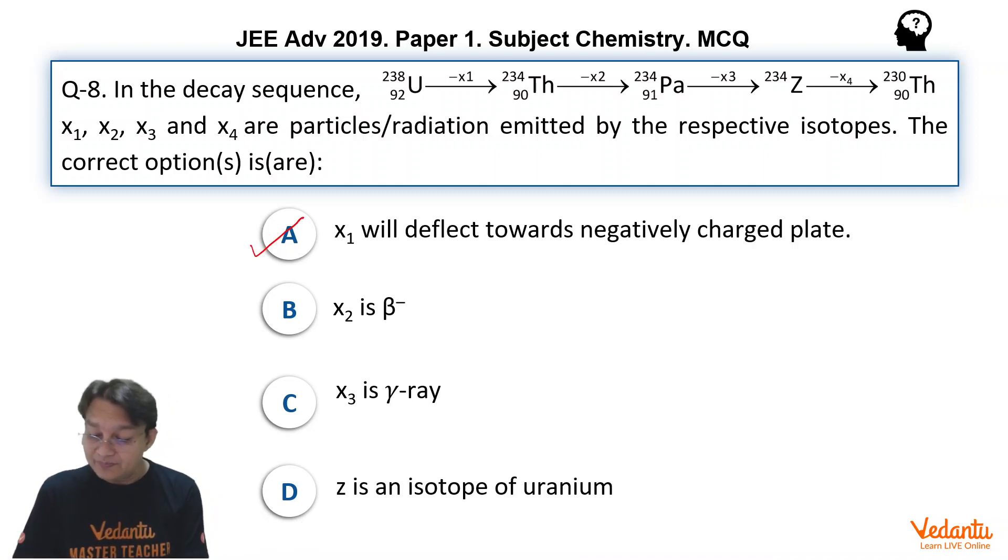X2 is beta negative, absolutely all right, because in this case we have seen that the mass number is not changing but the atomic number is increasing. X3 is a gamma ray, not possible. We have seen that X3 is also a beta particle.